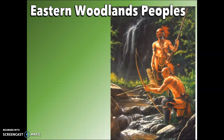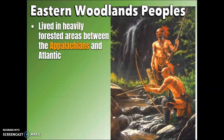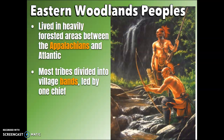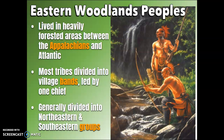Eastern Woodlands people is the first group in your notes. They lived in heavily forested areas between the Appalachians and the Atlantic. Most tribes divided into village bands led by one chief, and generally divided into northeastern and southeastern groups. The earliest known inhabitants of the eastern woodlands were the peoples of the Adena and Hopewell cultures, who inhabited the Ohio and Mississippi River valleys between 800 BCE and 800 CE — that is 1,000 years. BCE used to be thought of as BC, before Christ; now it is BCE, before current era, and CE is what you normally think of as AD.